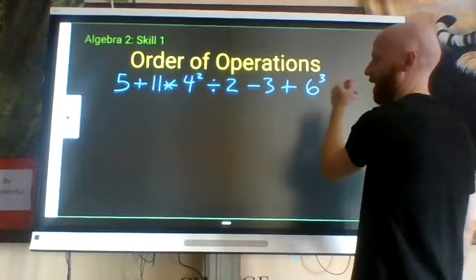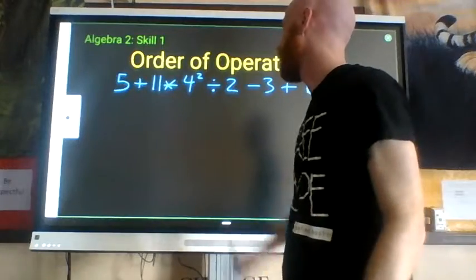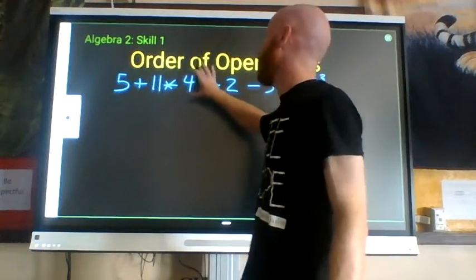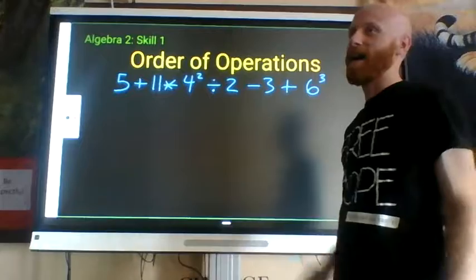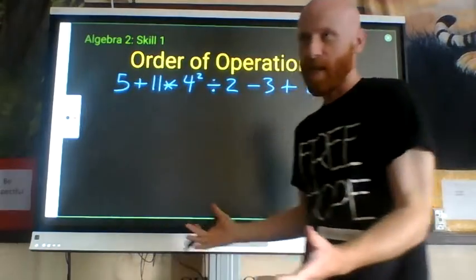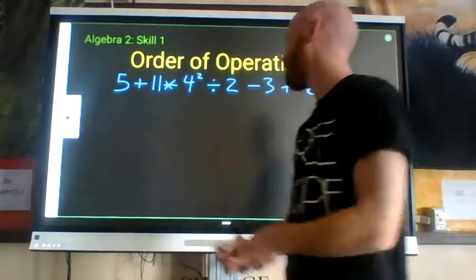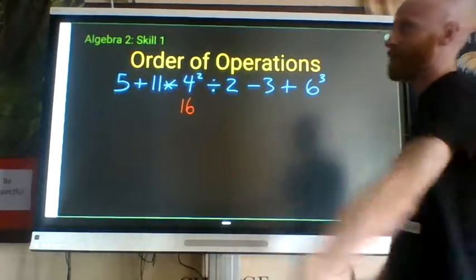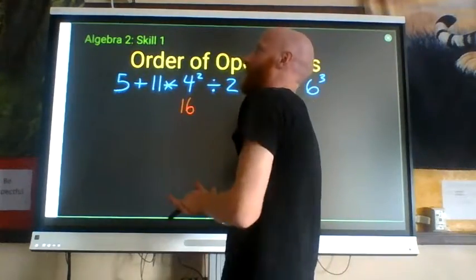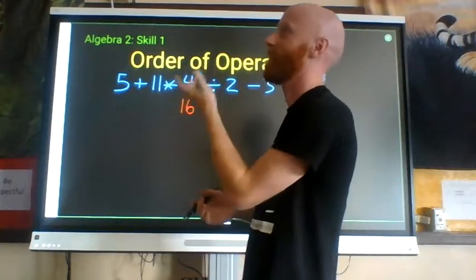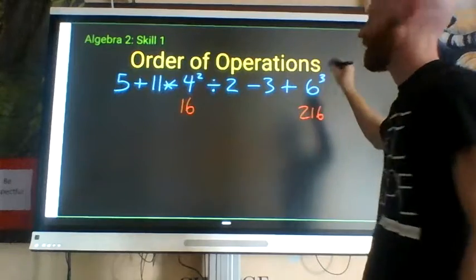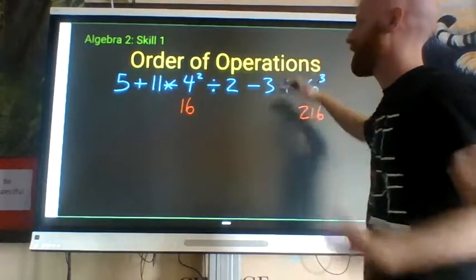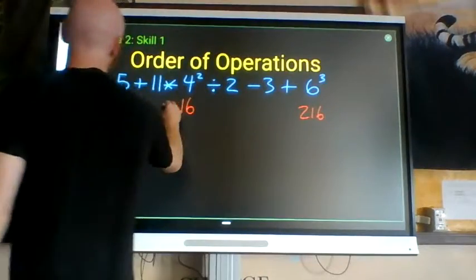When you have equally powerful operations, you apply the ones on the left first and work your way to the right. In a given problem, I would deal with exponents first. If powerful terms are separated from each other by lots of other terms, we can do them simultaneously. So 4-squared equals 16; 6-cubed: 6 times 6 is 36, times 6 is 216. I deal with all exponents, then bring down everything else.